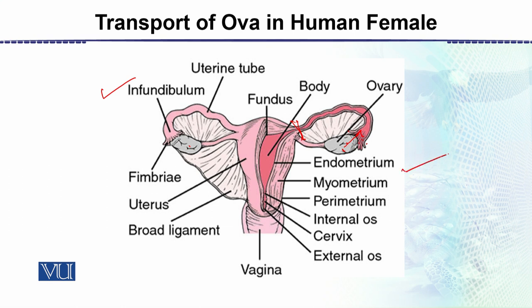یہاں پہ اس diagram میں کافی labels ہیں۔ This is the endometrium which is the innermost lining of the uterus — it is usually sloughed off and removed from the body monthly. اس کے بعد outermost layer of the uterus ہے، اور پھر cervix and then the external os.